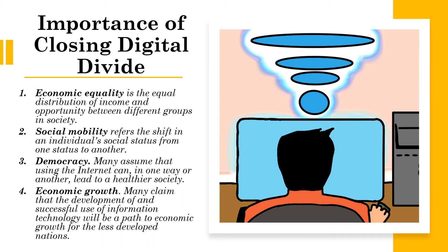We have economic equality, which is the equal distribution of income and opportunity between different groups in a society. Next, we also have social mobility, which refers to the shift in an individual's social status from one status to another.